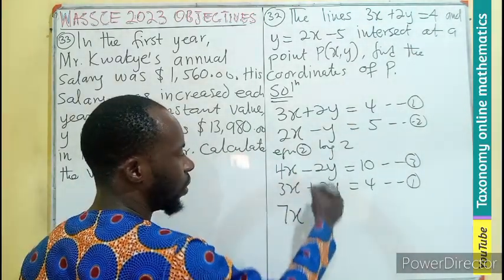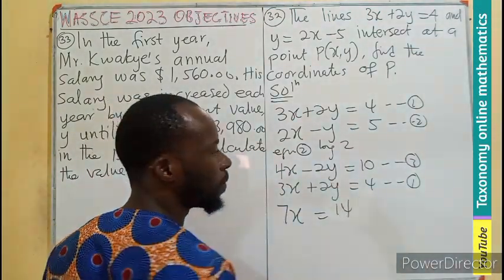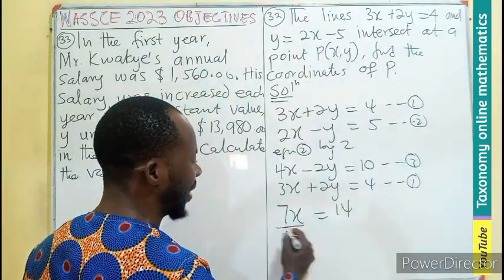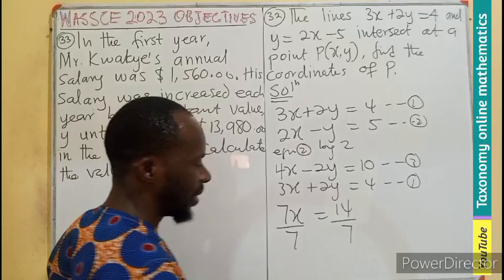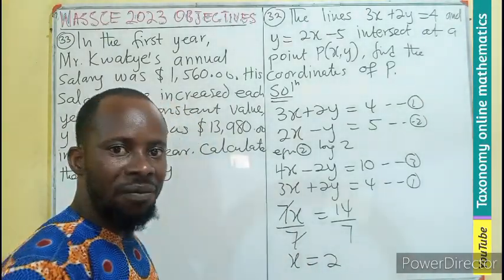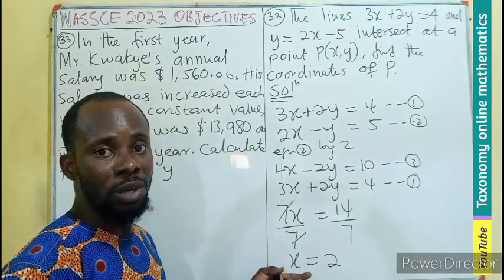3 plus 4 is 7x. This will give you 0. Equals to 14. Since I am looking for x, I divide by 7. If you cancel, your x will be equal to 2. Meaning, the value of x in this case is 2.